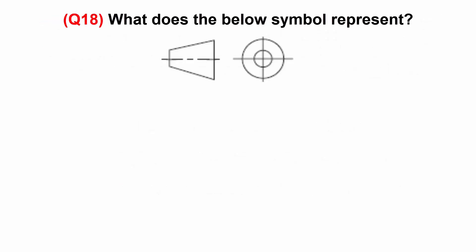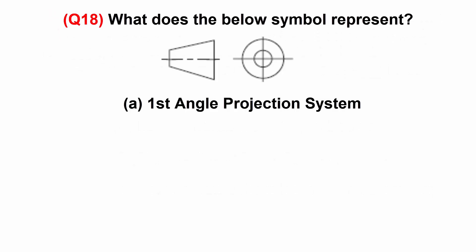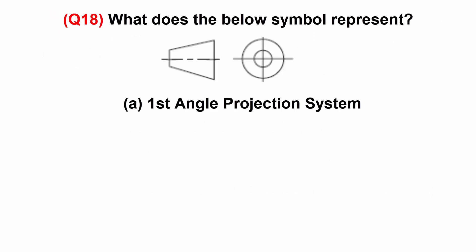What does the below symbol represent? A: first angle projection system. B: third angle projection system. C: none of the above.